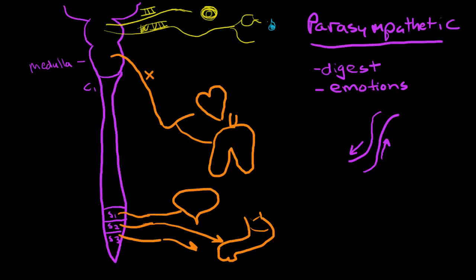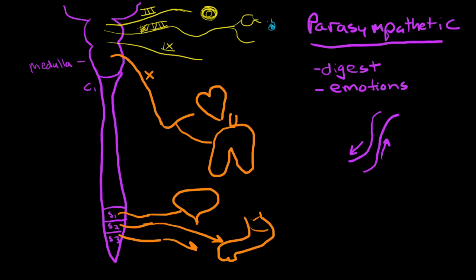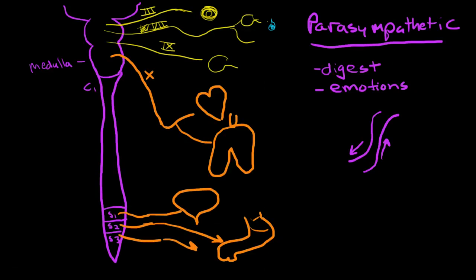The other nerve that's innervated is cranial nerve number 9, the glossopharyngeal nerve. This innervates the parotid gland and the other salivary glands, and controls salivation.